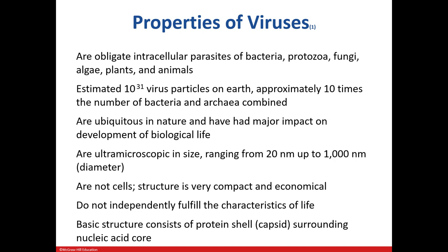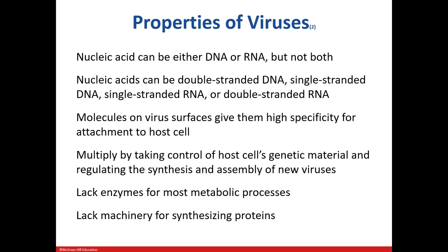They're much smaller than bacteria and are not considered to be cells. They're made up of a capsid, which is a protein shell, that surrounds their genetic information. The genetic information that they possess is either DNA or RNA, but it can't contain both. This DNA can either be double-stranded or single-stranded, and the same goes for RNA. On the surface, they have spikes which enable them to attach to a host cell and invade. These spikes are very specific, much like a key is specific for a particular lock. Once they gain entry, they use the host cell's enzymes to make more of itself, because they don't have the specific enzymes for basic reactions and synthesis of proteins.